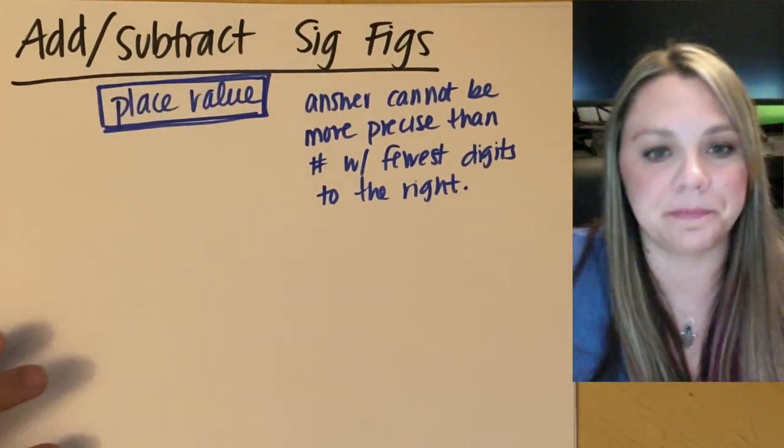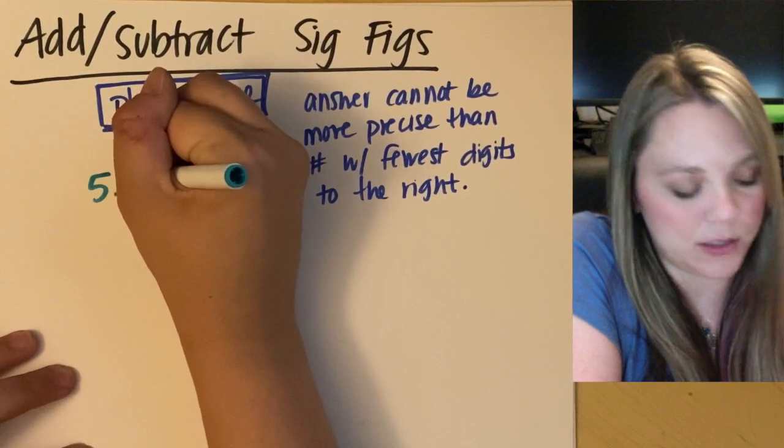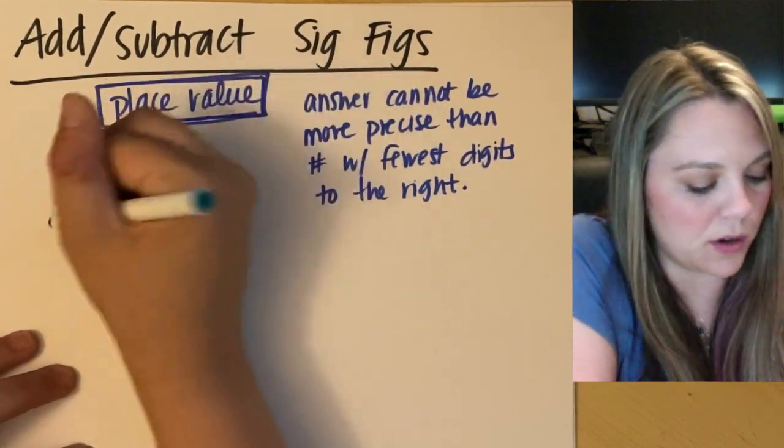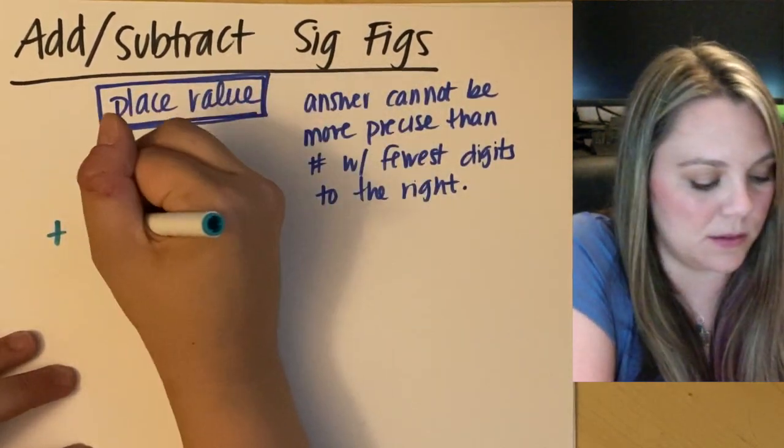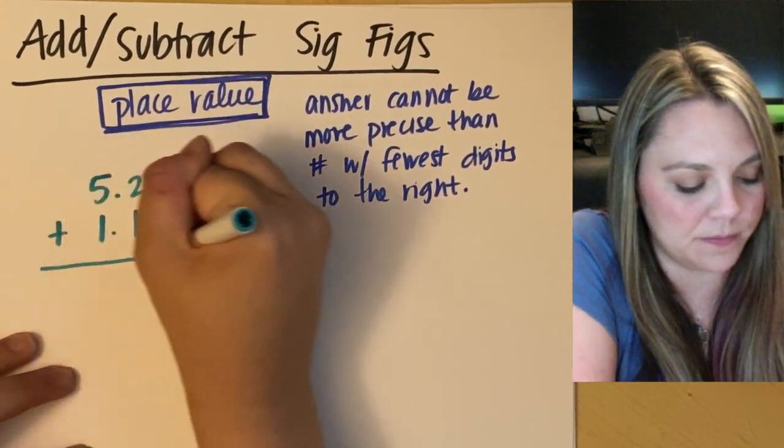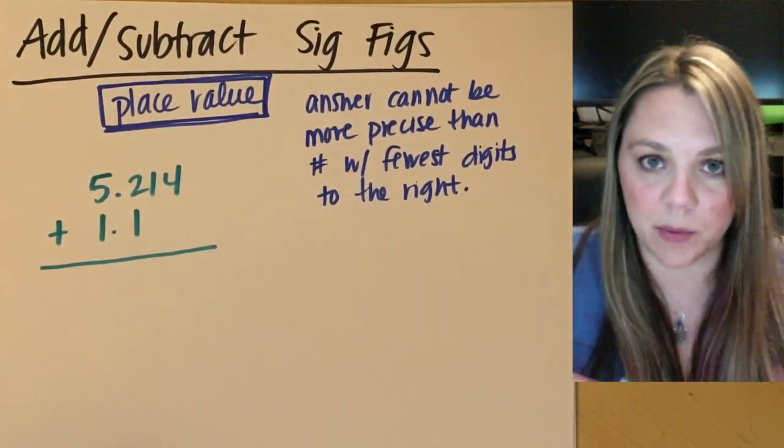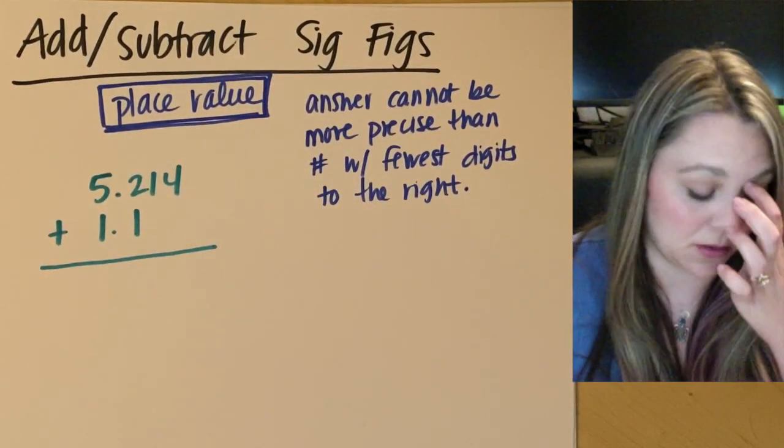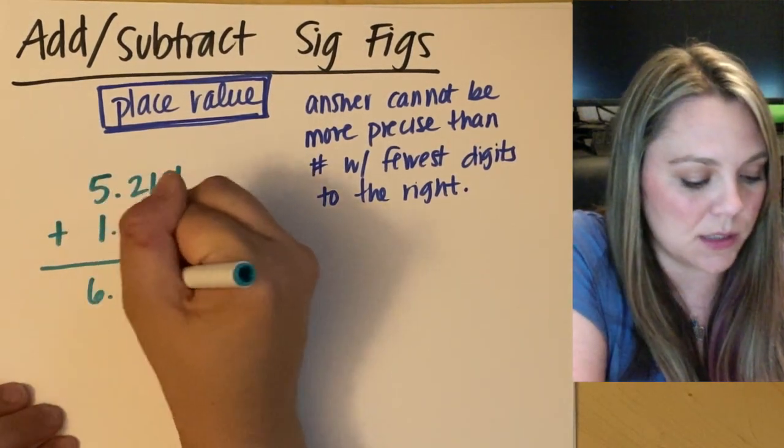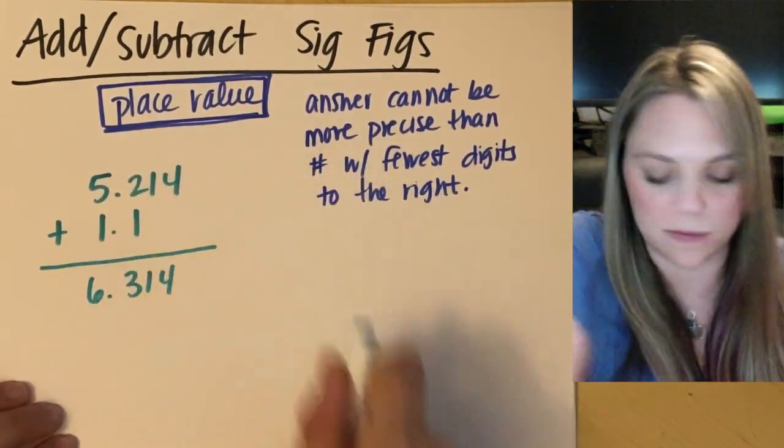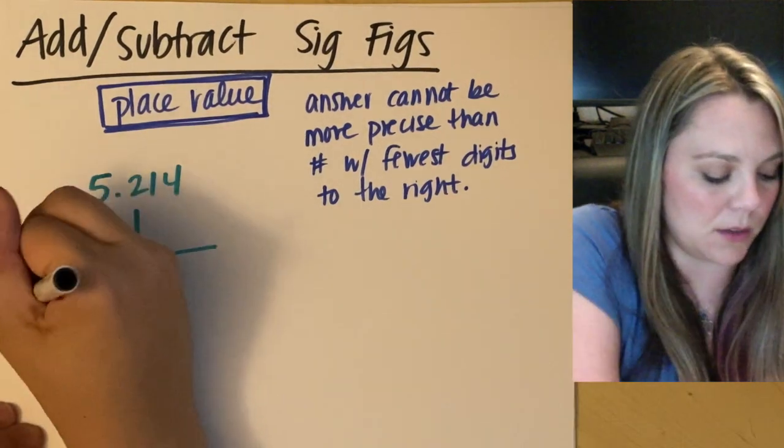So if I had an example, 5.214 plus 1.1, and I added these up and I put this in my calculator, beep, boop, beep, my calculator would spit out 6.314. Right? That's what my calculator would give me.